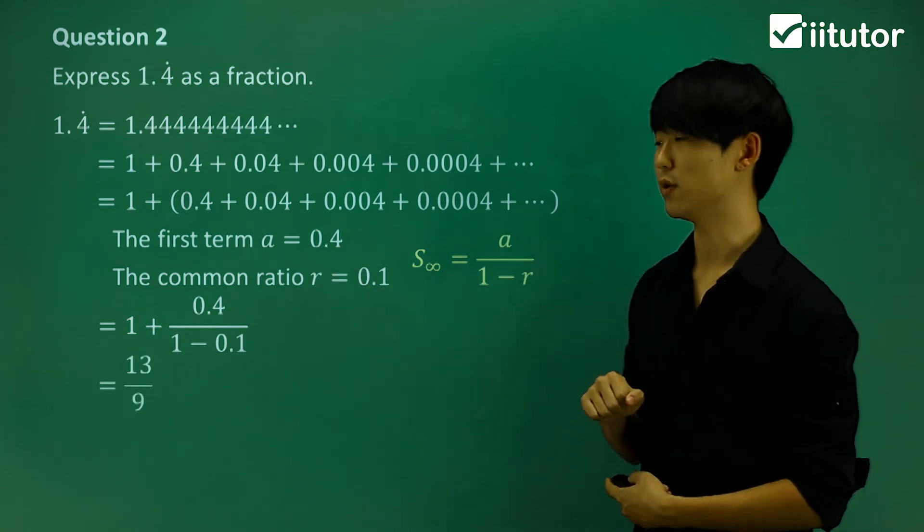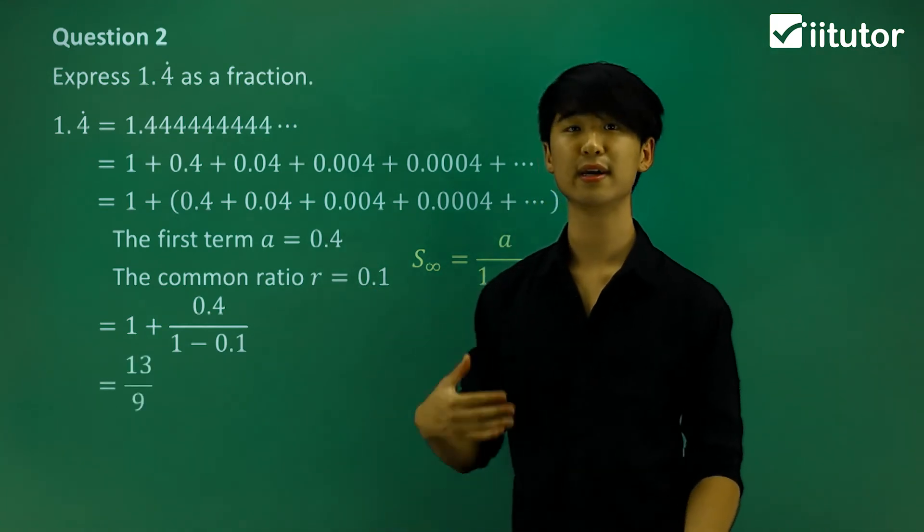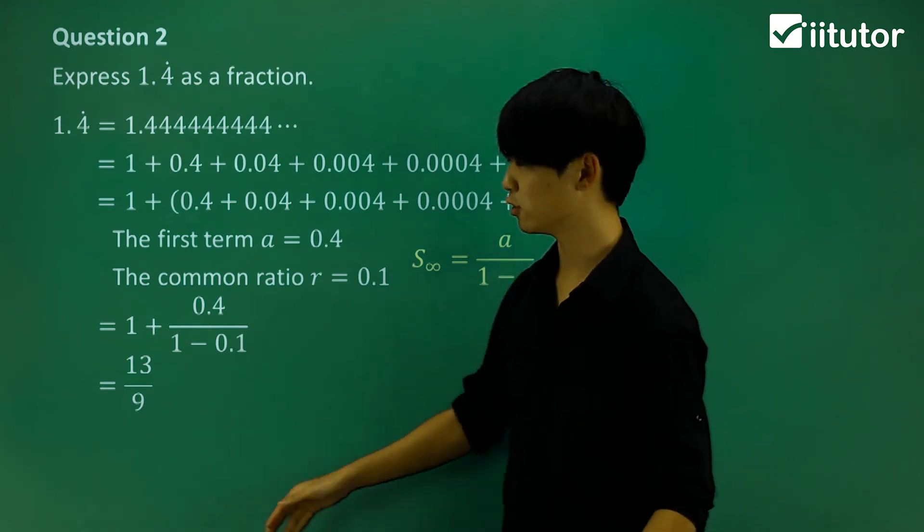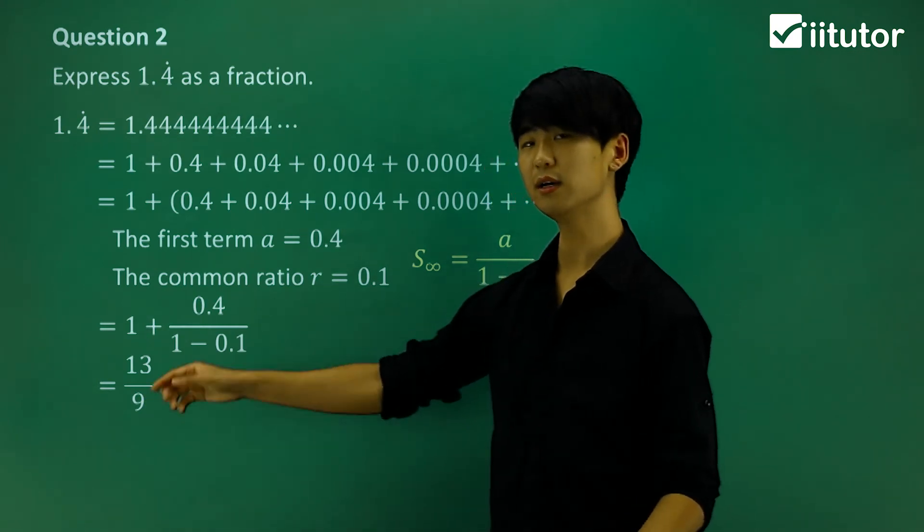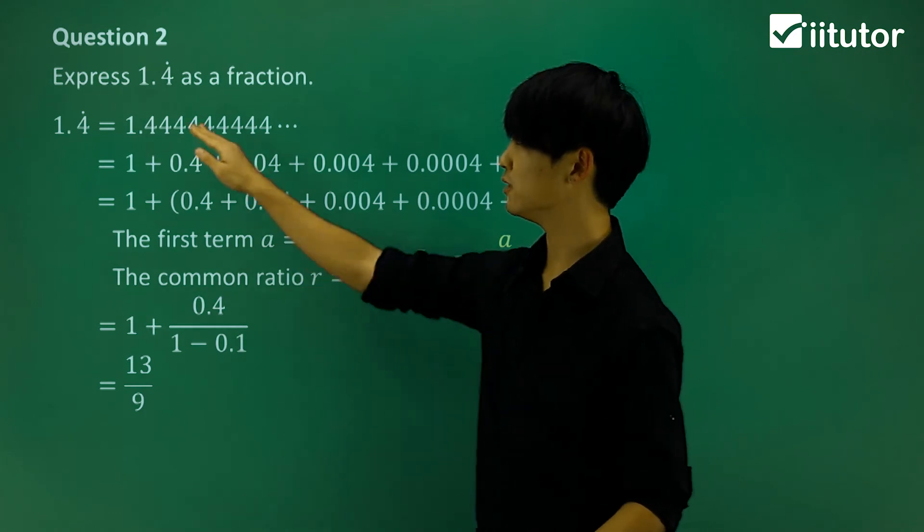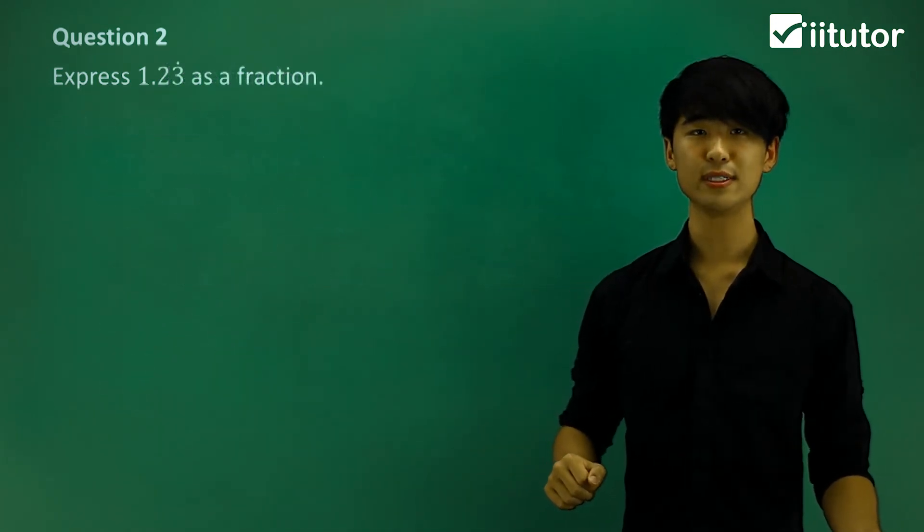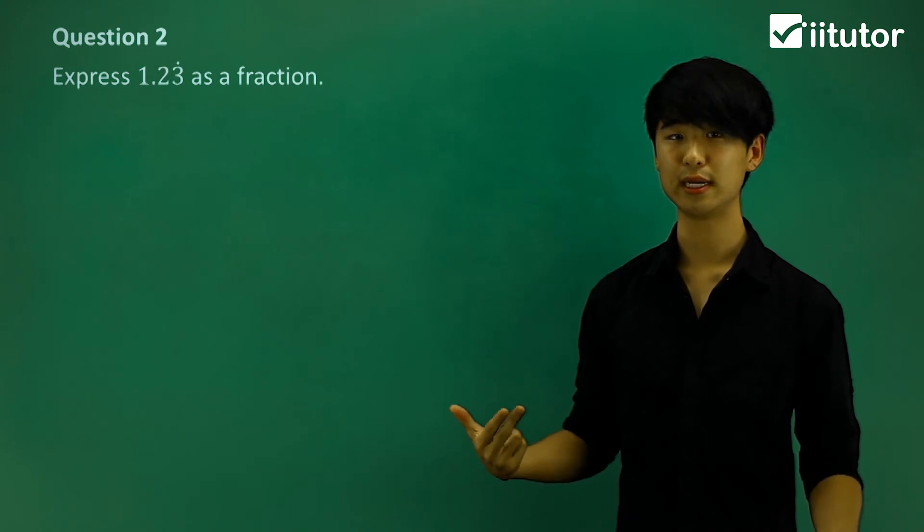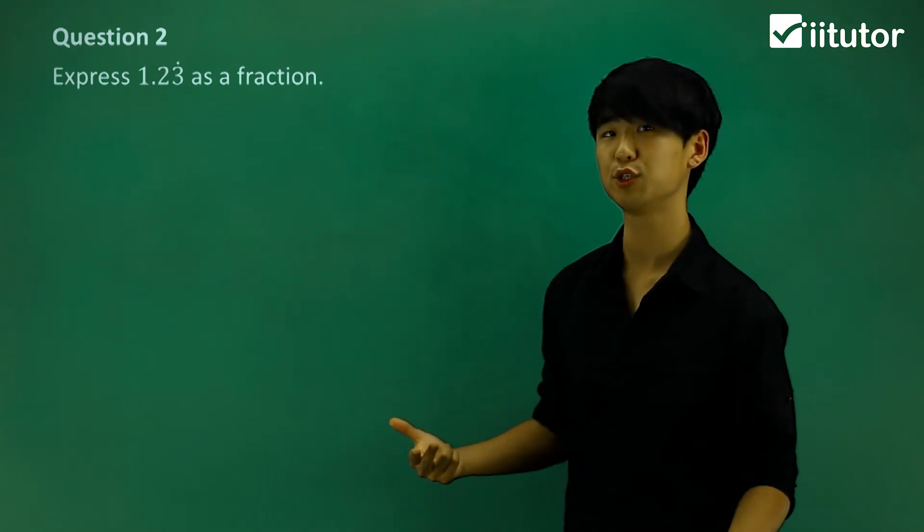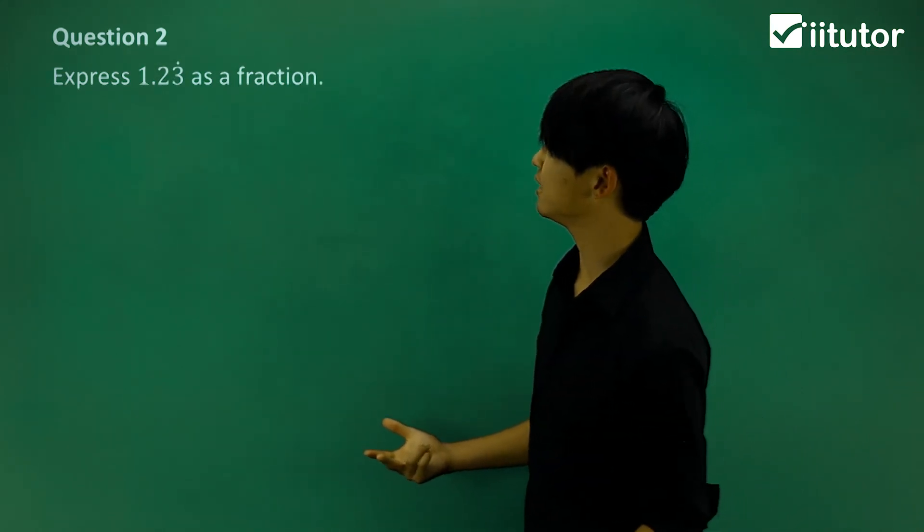So simply, if we put this into our calculator, 13 over 9 is my fraction. And again, if we're not sure if that's right, just put that in your calculator and see if the decimal gives you 1.4 recurring. Now, if we take a look at the next one, express 1.23 recurring as a fraction.